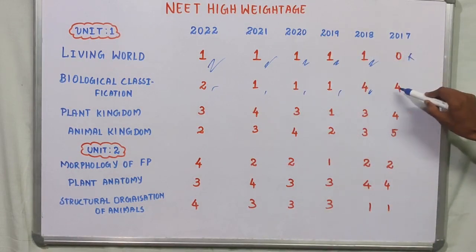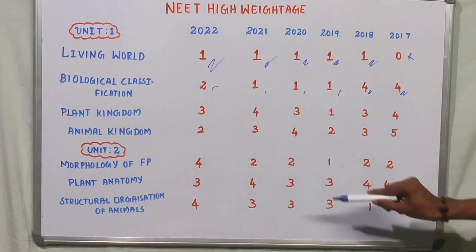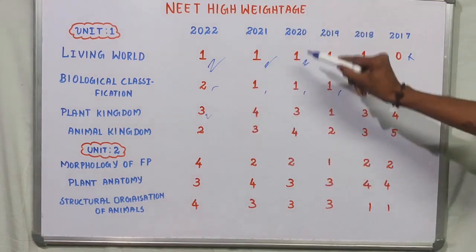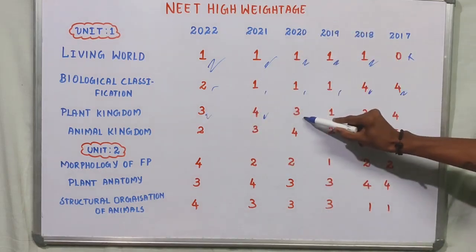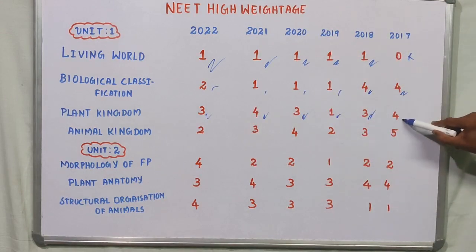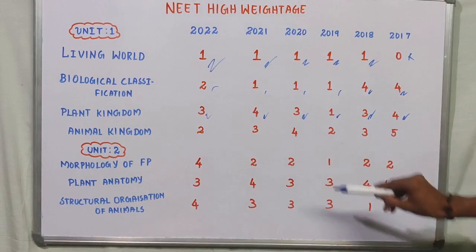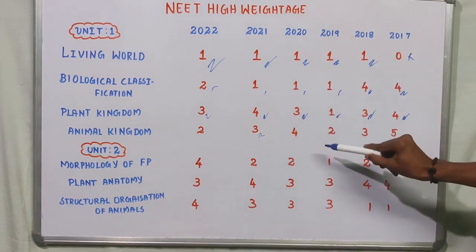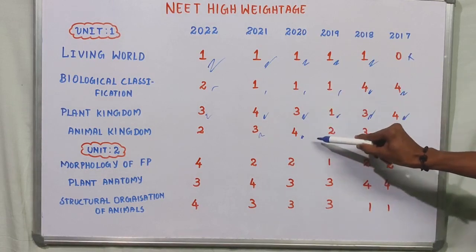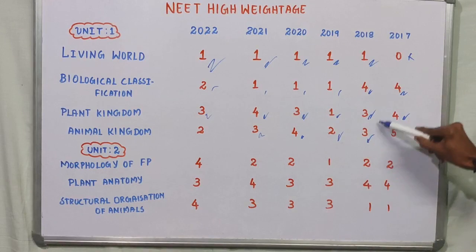In 2019 we got 4 questions; in 2018 and 2017 we also got questions from this topic. In 2020 we got 2 questions, and in that year 9 questions total. In 2021 we got 2 questions, then 3 questions, then 1 question — and finally 2 questions. The running totals across years are approximately 10, 3, 10, 5.